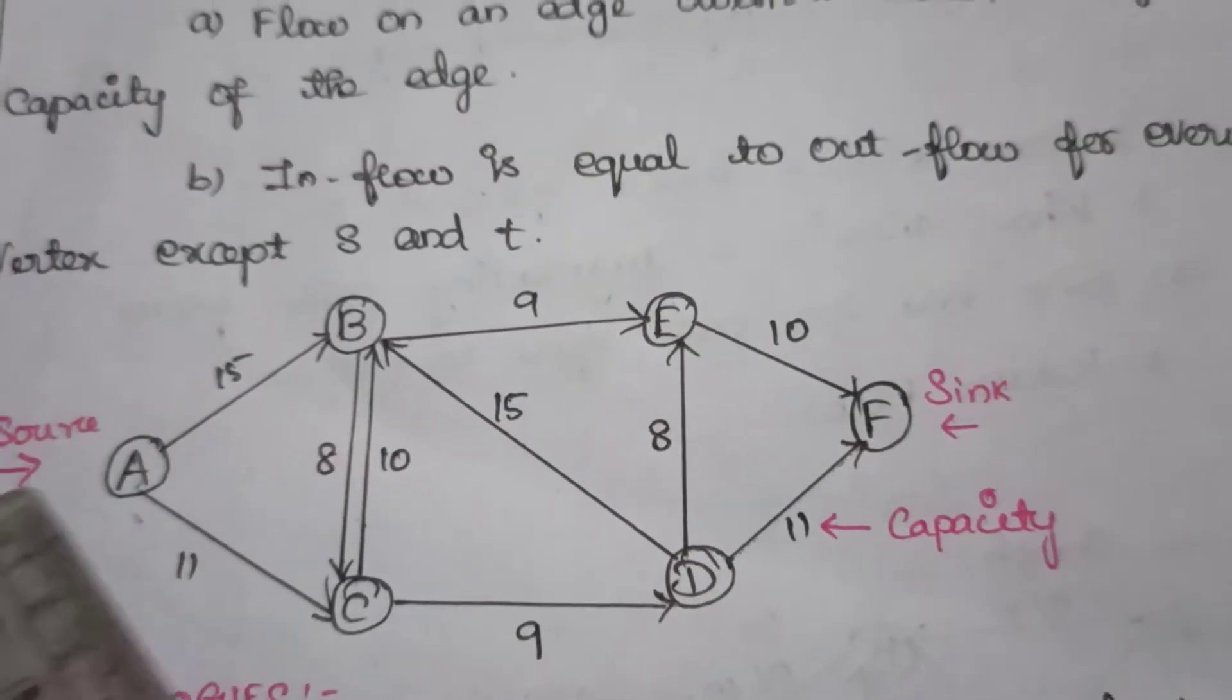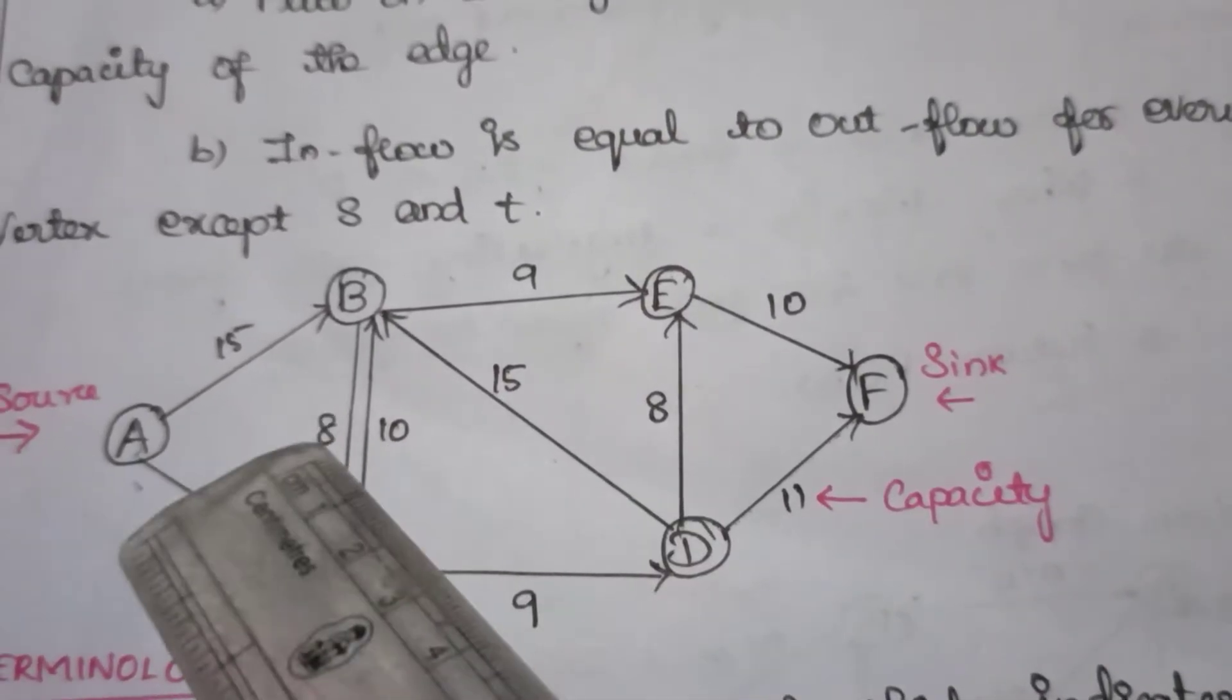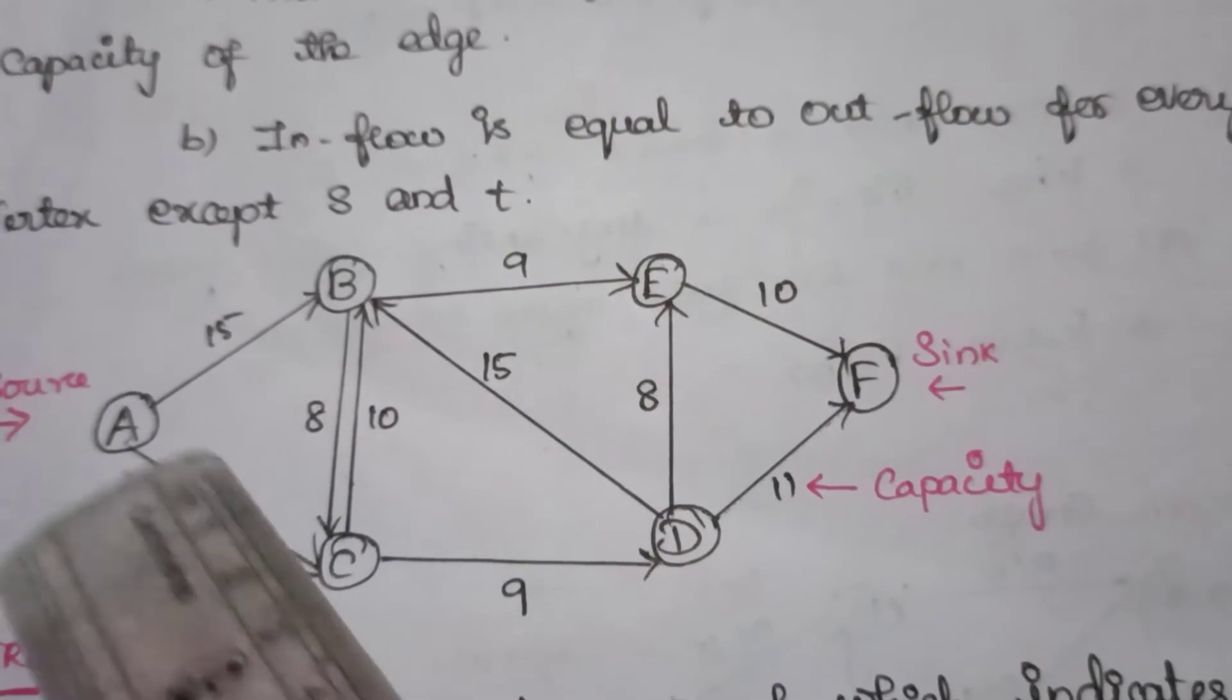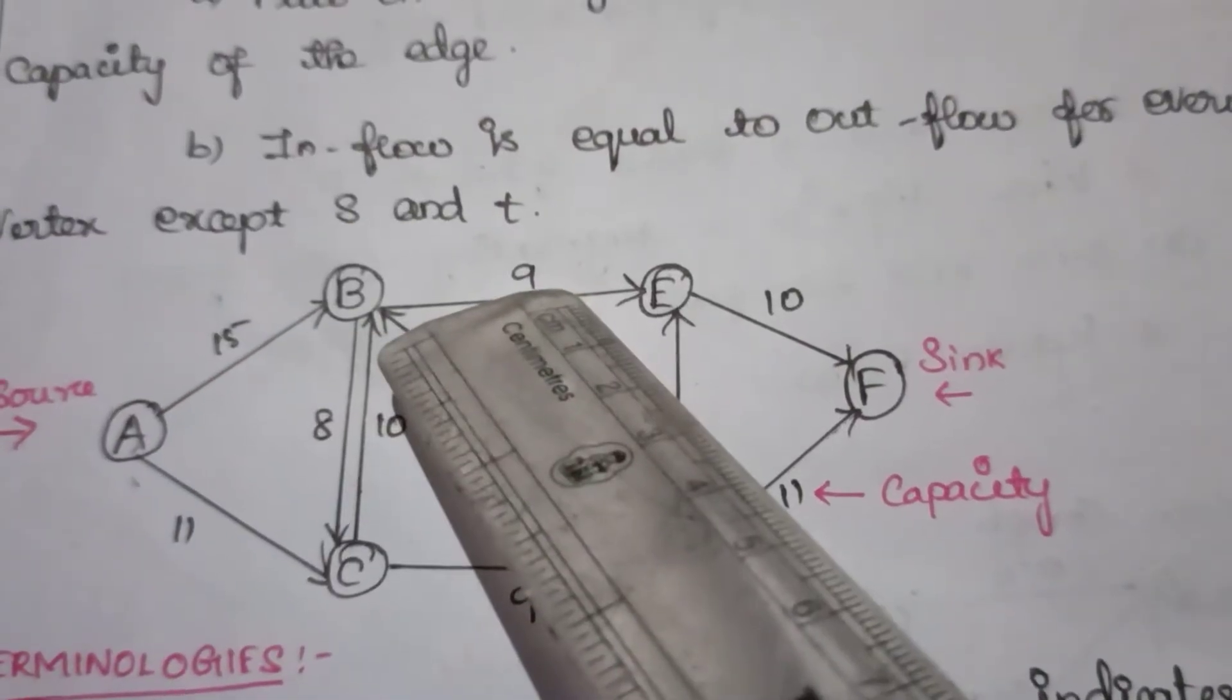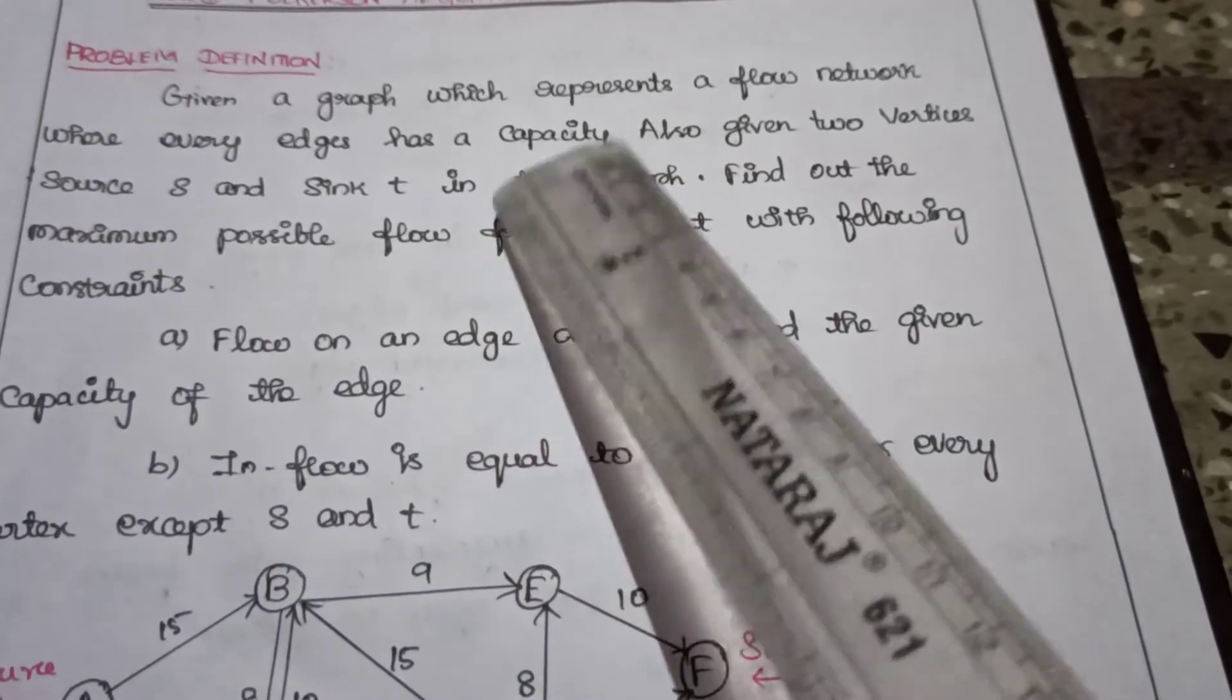Look at the flow network. It is a directed graph which has a number of vertices connected with edges with respect to weight, which is known as capacity.